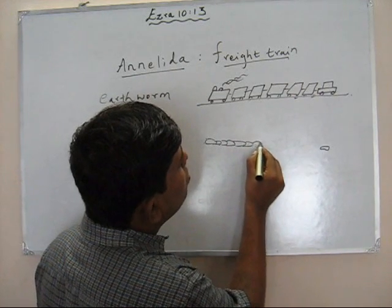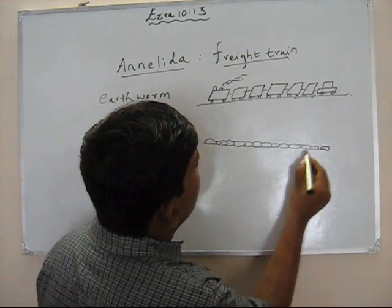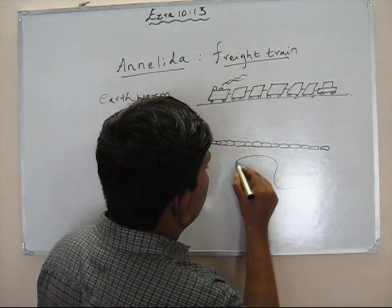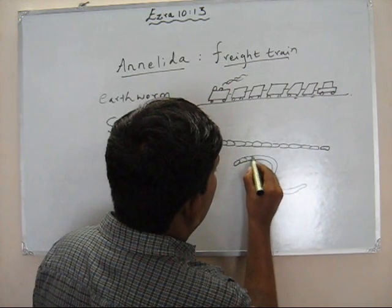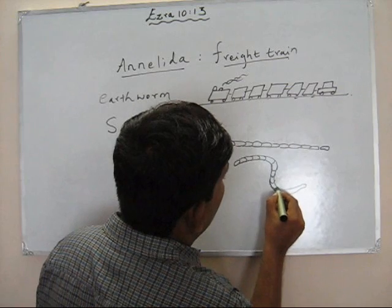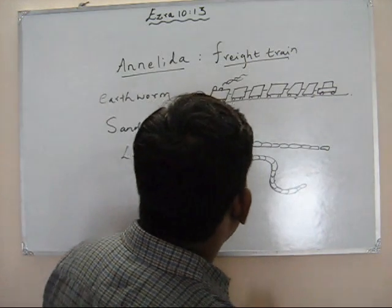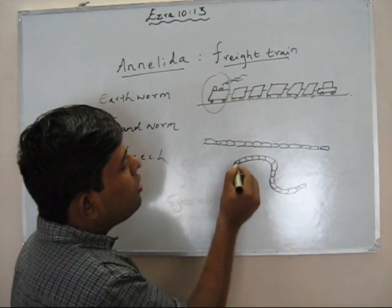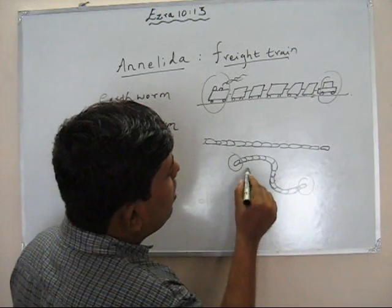For all those who would have observed an earthworm, you know normally it's like twisted. There's a big ring and then many segments — many of us would have observed an earthworm like this. Now focus: the engine is the head, the caboose is the tail, and the freight cars are the segments.